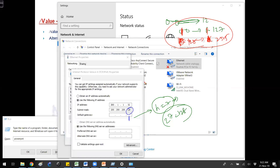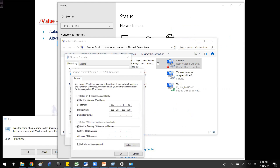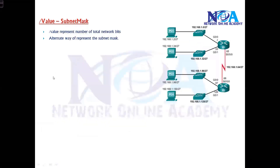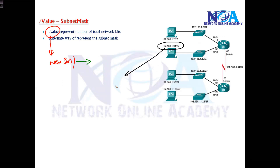Subnet mask is mandatory — without it, the device will not accept the configuration, whether it is a router or any other device. In newer operating systems and newer networking devices, we generally write in a different format. In documentation diagrams, you see something like 192.168.1.34/27 — where slash 27 is the slash notation.